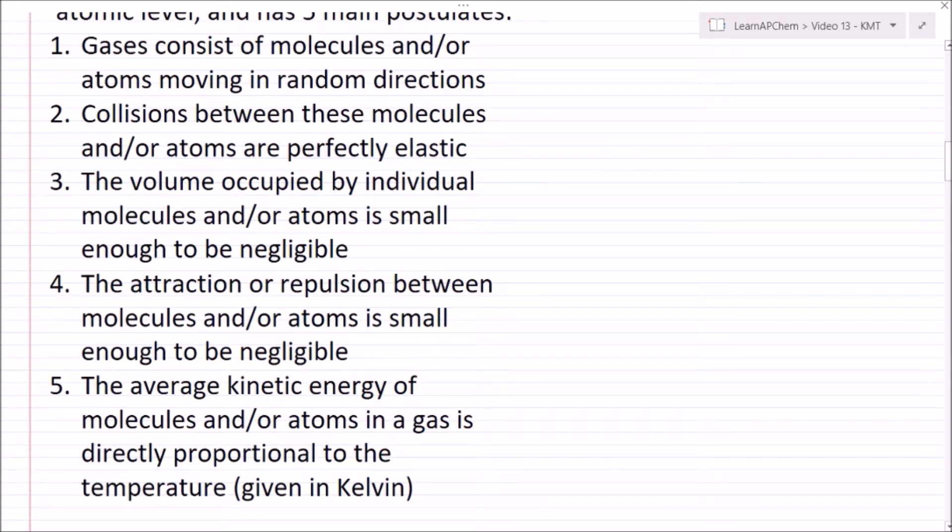The second one says that collisions between these molecules are perfectly elastic. So basically if one gas molecule hits off the other at say four meters per second, this doesn't take any of the energy and this is just going to bounce back at exactly four meters per second. So no energy is lost to friction or anything.